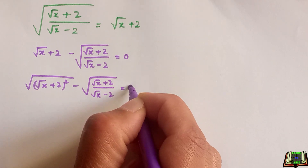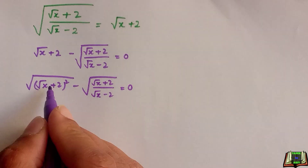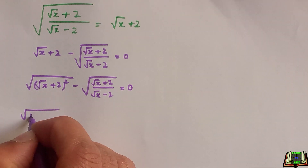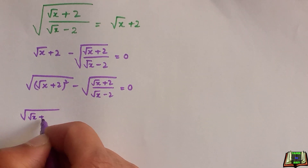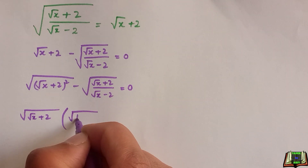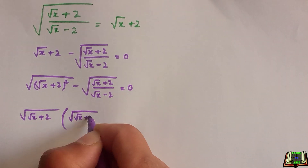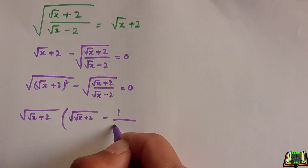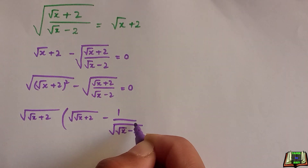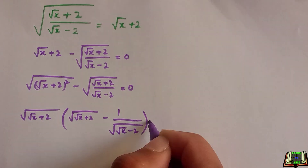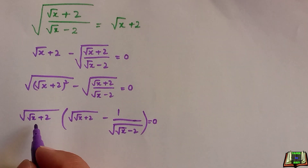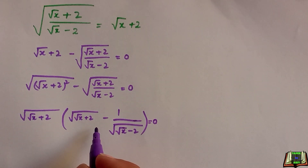This expression equals zero. We can factor out the square root of (root(x+2)), and inside the bracket we have the square root of (root(x+2)) divided by the square root of (root(x-2)), minus one, equals zero. So we get two factors: either this first part equals zero, or the bracketed part equals zero.